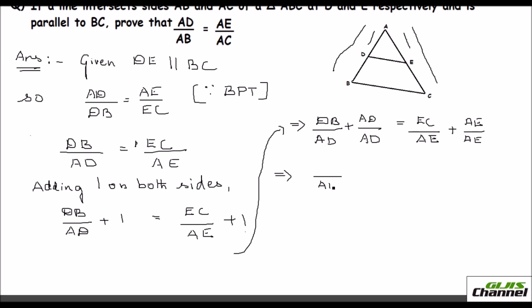So what happens? DB plus AD, you can see here, this is DB. DB plus AD is AB. So I got that AB here and on my right, it is EC, this side plus AE. So that will be AC over AE. Flip this again. So you get AD over AB is equal to AE over AC and this is what you need to prove. So proved.